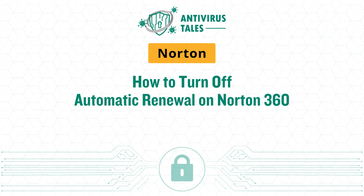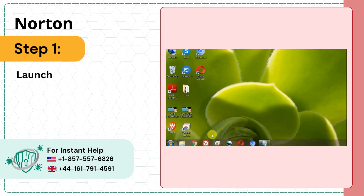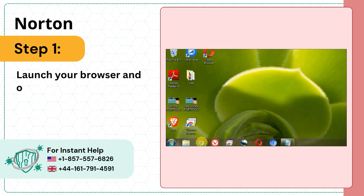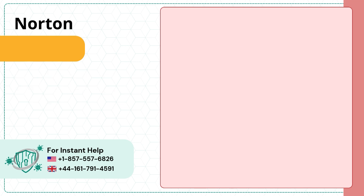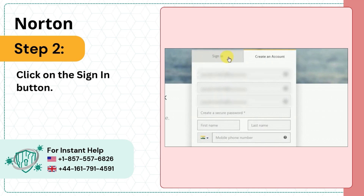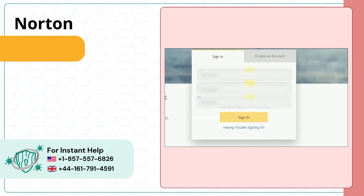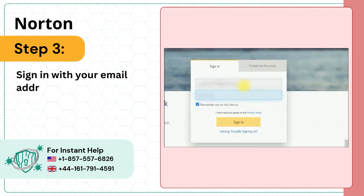How to Turn Off Automatic Renewal on Norton 360. Step 1: Launch your browser and open the My Norton website. Step 2: Click on the Sign In button. Step 3: Sign in with your email address and password.